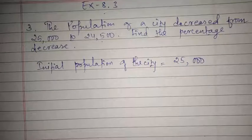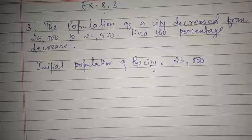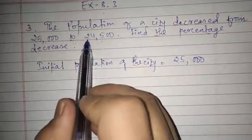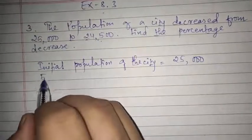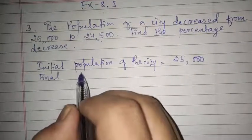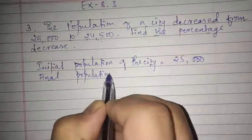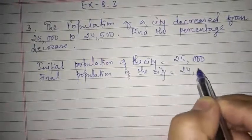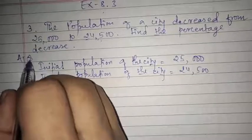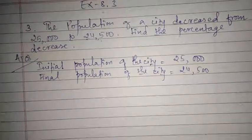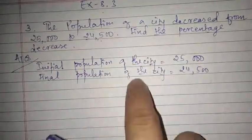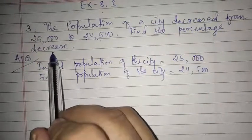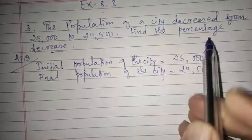Since the population is getting reduced, we write the final population of the city, which is equal to 24,500. So the initial population of the city is 25,000 and the final population of the city is 24,500. Now they have asked us to find the percentage decrease.